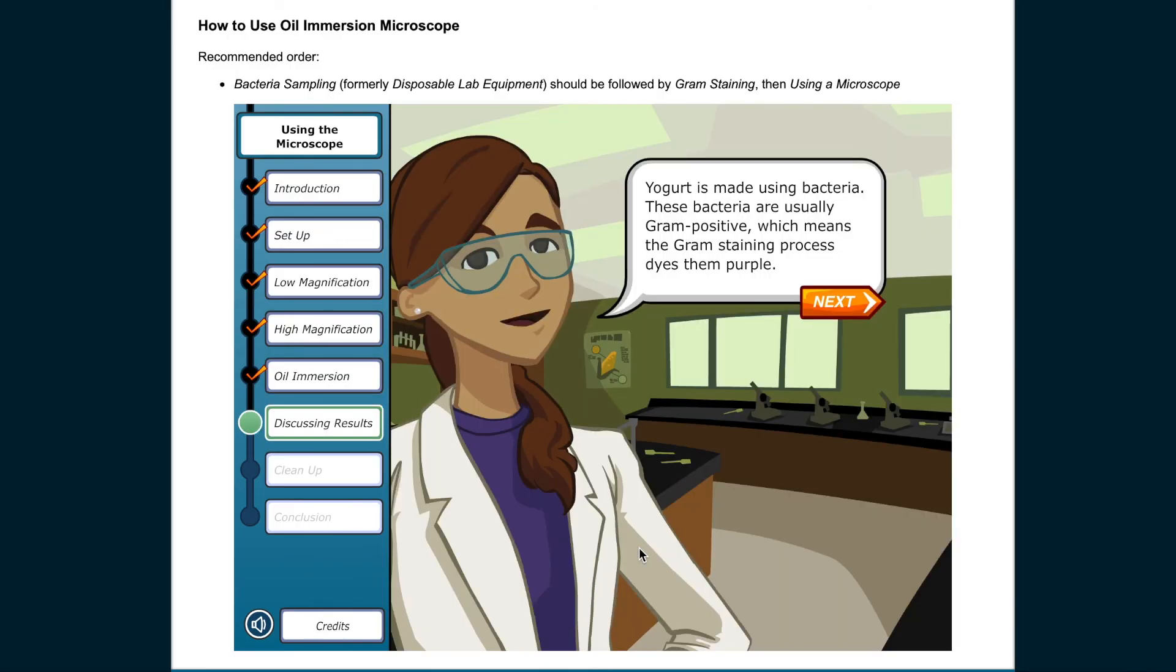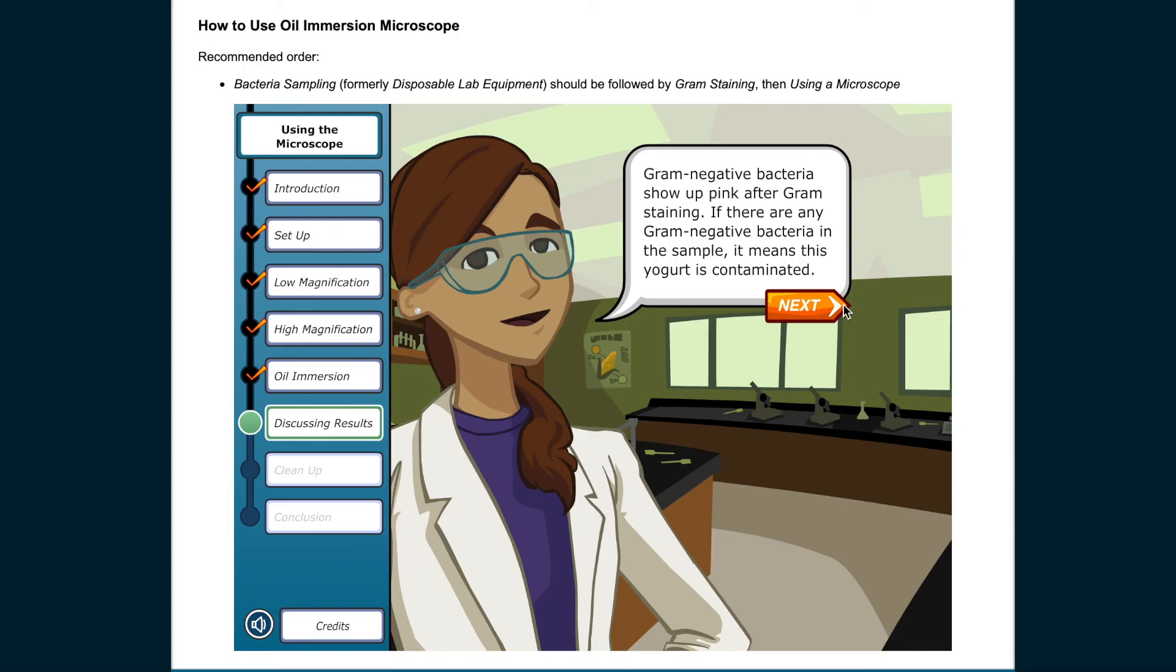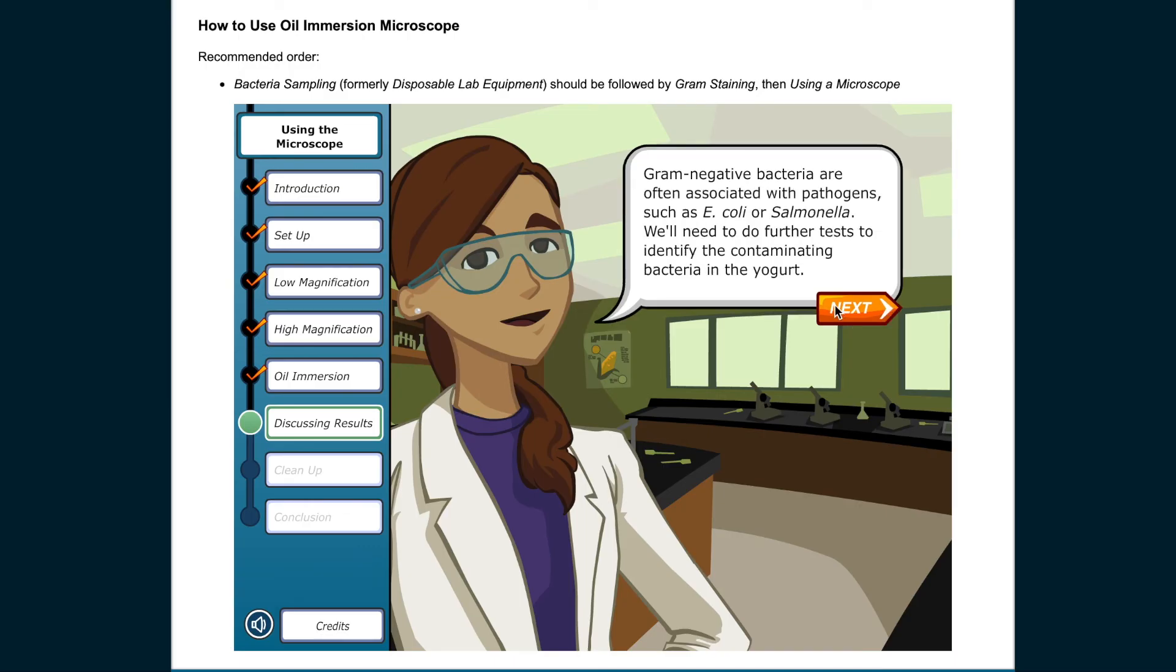Yogurt is made using bacteria. These bacteria are usually gram positive, which means the gram staining process dyes them purple. Gram-negative bacteria show up pink after gram staining. If there are any gram-negative bacteria in the sample, it means this yogurt is contaminated. Gram-negative bacteria are often associated with pathogens, such as E. coli or Salmonella. We'll need to do further tests to identify the contaminating bacteria in the yogurt.